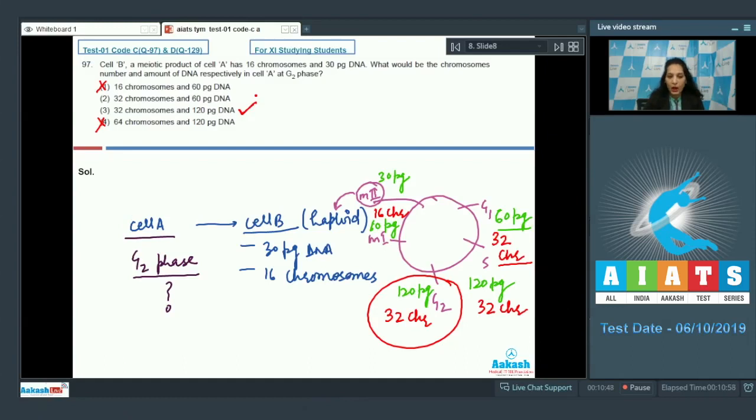You can easily solve these types of questions where the content of DNA in the chromosome is given in the haploid cells and asked in the G2 phase - just multiply the DNA content by four, because whatever the DNA content is present in the meiotic products it would have been four times in the G2 phase, and the chromosome number should be double in the G2 phase. That's why it is half in the meiotic products. So the correct option for the given question is option number three.